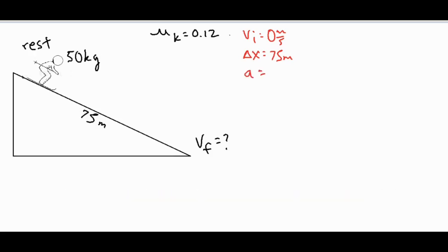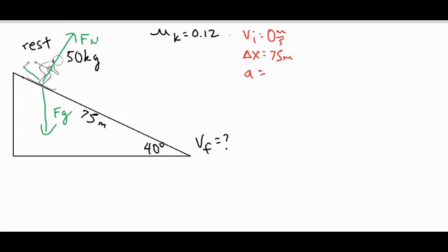The angle of the decline is 40 degrees. We can draw a diagram and include this angle to solve for values that help us find the acceleration. We have the force of gravity straight down, the normal force perpendicular to the ramp, and in the case with friction, the force of kinetic friction would be going against the slide. For the first part of the problem we're going to ignore friction.